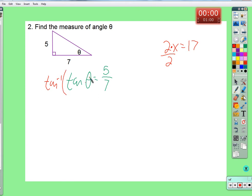Inverse of tangent. On both sides. So theta equals inverse tangent of 5 over 7. 35.5 degrees.